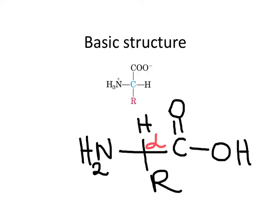At physiological pH, the carboxylic acid group will be deprotonated, so you will not see this hydrogen. The amino group will be bonded to an extra hydrogen, so it will have a plus charge.